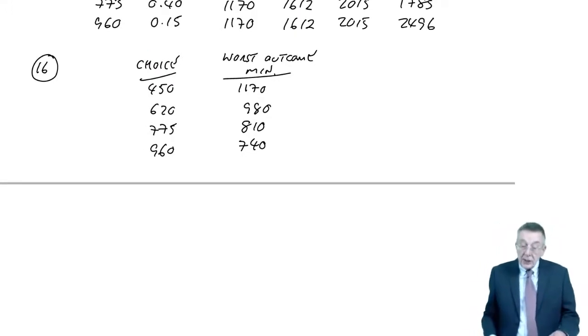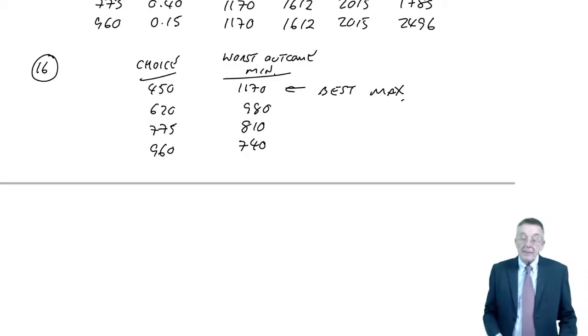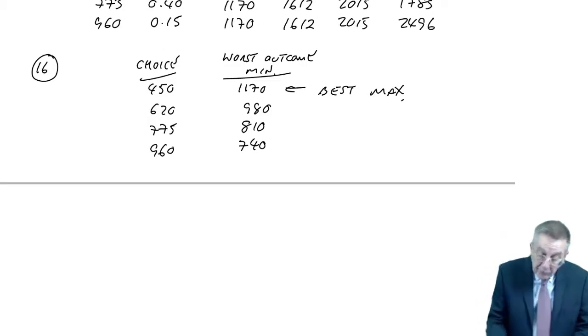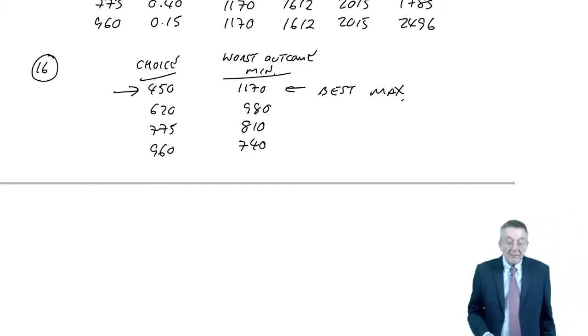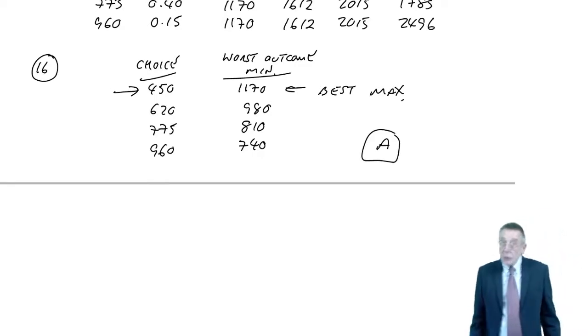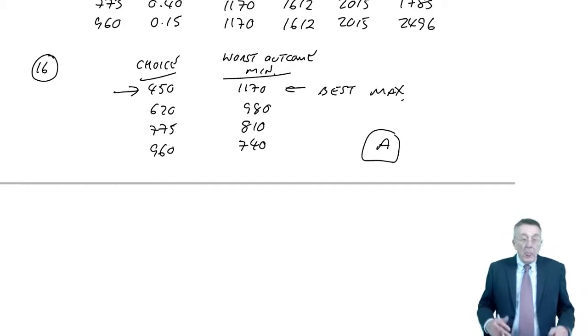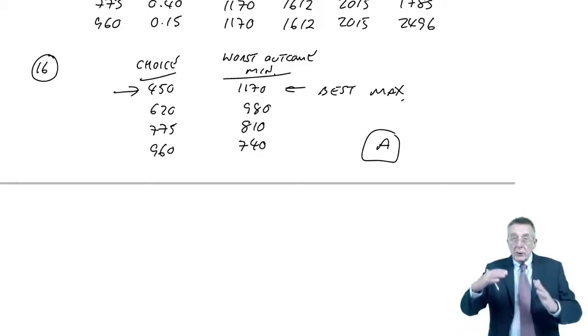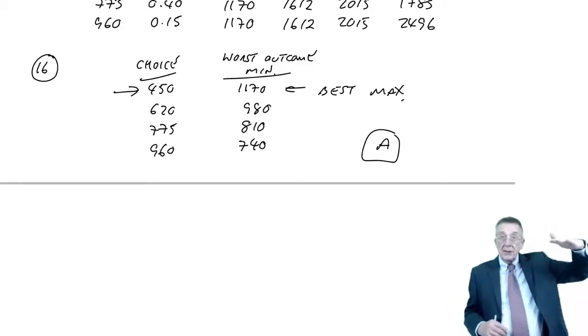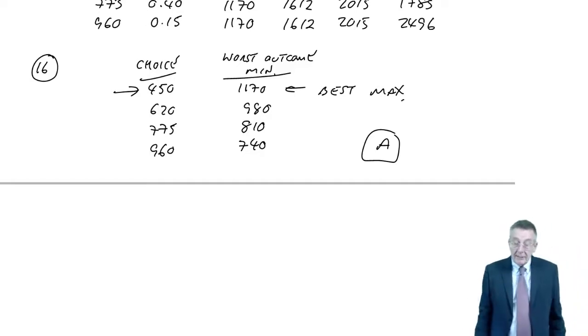So there's the worst outcome in each case. To decide which one he's going to choose, you pick the best of the worst or the maximum. Maximum 1170. And therefore, he will go for 450, which is answer A. So if you've learned the rule, that's an easy one because you were given the table. Just make sure you're aware of the way around it's drawn. It could be either way, sometimes uncertainty is along the top and the decision down the side. So think carefully, but it is clear enough here.